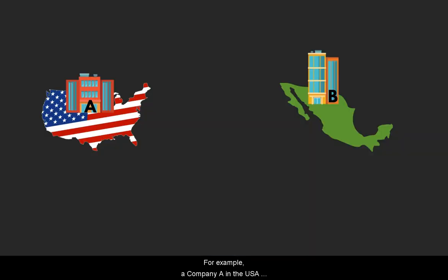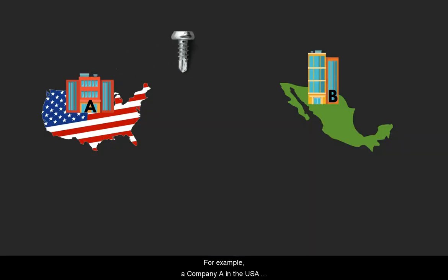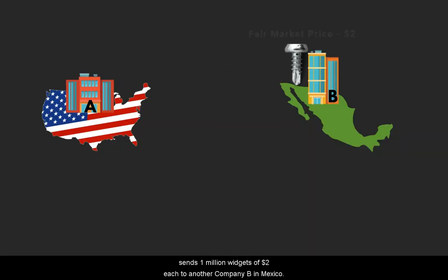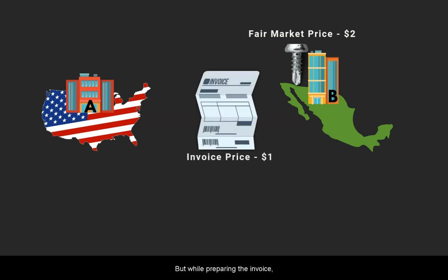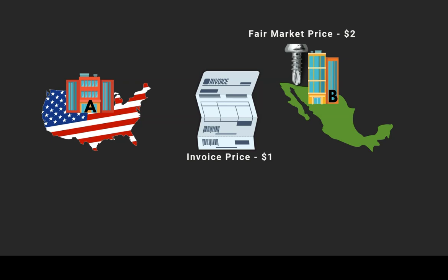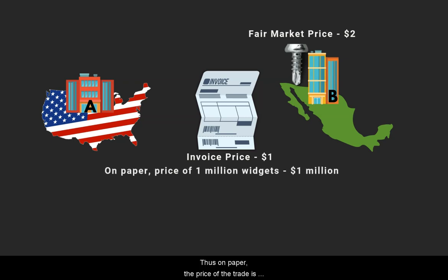For example, a company A in the USA sends 1 million widgets at $2 each to another company B in Mexico. But while preparing the invoice, company A does under-invoicing — below the fair market price — and mentions the price of each widget as $1. Thus, on paper, the price of the trade is declared as $1 million.